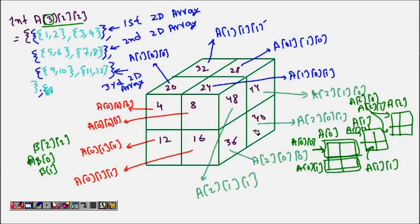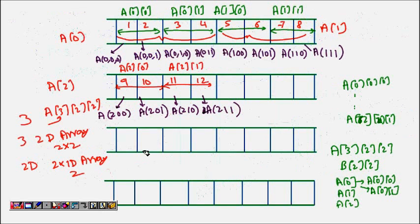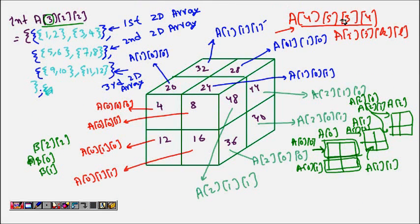The same idea extends further. For a four-dimensional array like a[4][5][3][4], accessed as a[i][j][k][l], there are four three-dimensional arrays. The computer will again store it linearly using the same recursive pattern we discussed for the three-dimensional case. There will be four 3D arrays laid out in memory one after another. So I hope you understand this — thanks a lot.